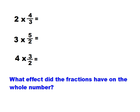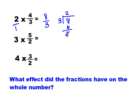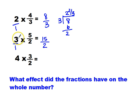Let's do some more examples. If I'm dealing with 2 times 4 thirds — 4 thirds is improper — I should end up with a number greater than 2. 2 times 4 is 8, 1 times 3 is 3, I've got 8 thirds. That gives me 2 and 2 thirds. Next, 3 times 5 halves: 3 times 5 is 15, and 1 times 2 is 2. Notice 5 halves is slightly bigger than 2, so I should end up with a number slightly bigger than twice 3. That gives me 7 and a half, which is slightly bigger than 2 times 3.